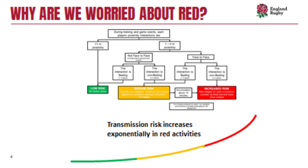The question is: why are we worried about the red? If we look at this graph — the top part is the same as the previous slide — underneath it shows the relationship between low, medium, and increased risk activities and how much the risk increases. We think that the increased risk activities have a much higher risk than the medium risk and certainly than the low risk activities, and this isn't just something that increases in a straight line. The red area is really the thing we want to avoid.